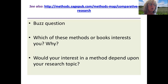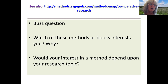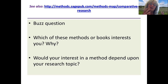Which of the following books or methods interest you, and why? We're going to break into breakout groups during the discussion period and look at the SAGE comparative methods map, which has a whole bunch of links to different types of comparative research — so many in that list, it's just amazing. I wanted to know which of those methods would interest you. And then the question is: would your interest in a method depend on what your topic was? Would your topic already be given when you decide how interested you are in the method?